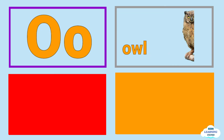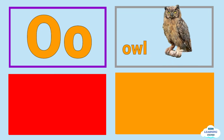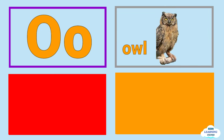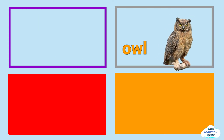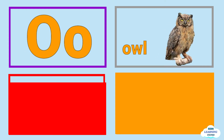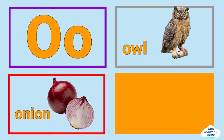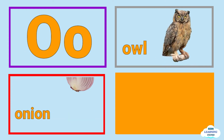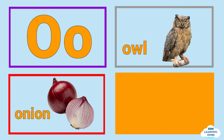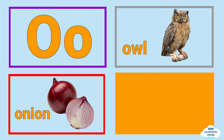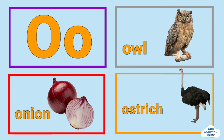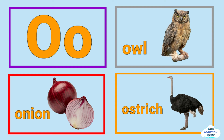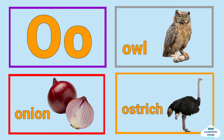O is for owl, owl. O is for onion, onion. O is for ostrich, ostrich.